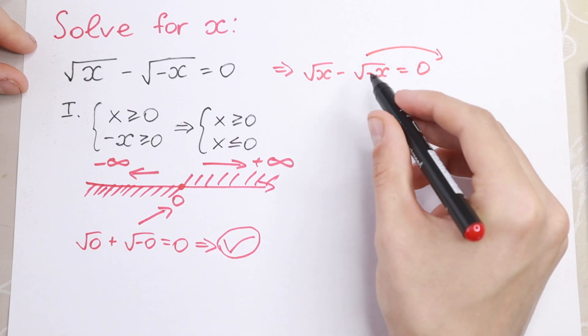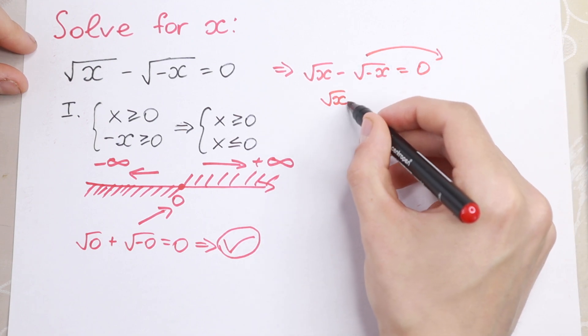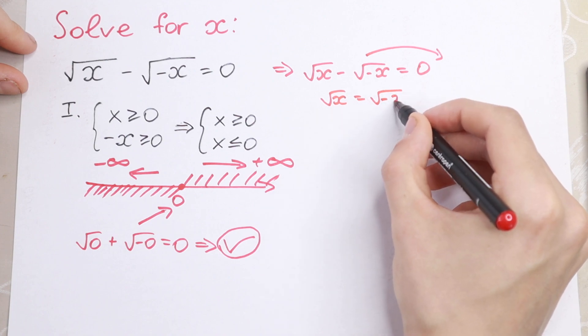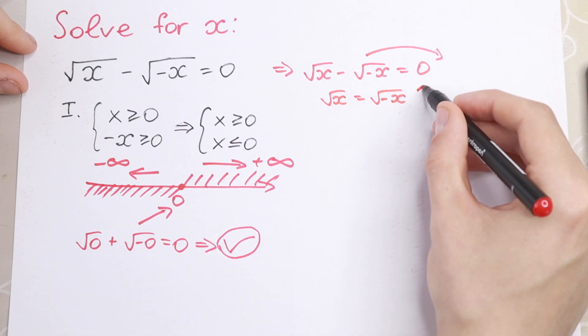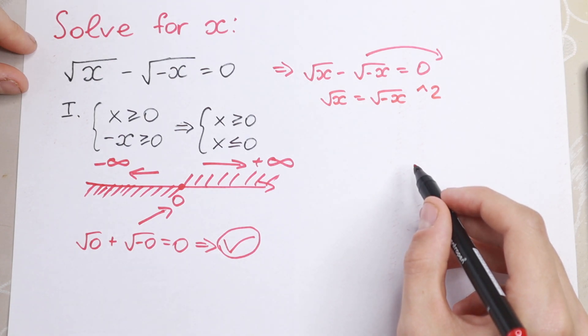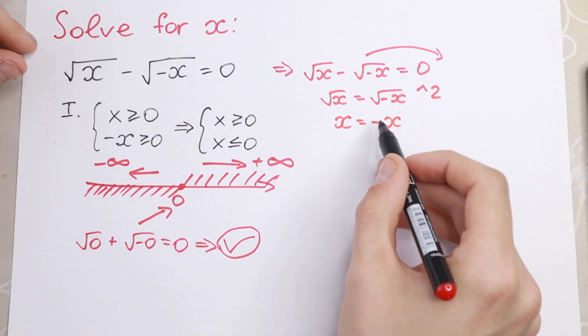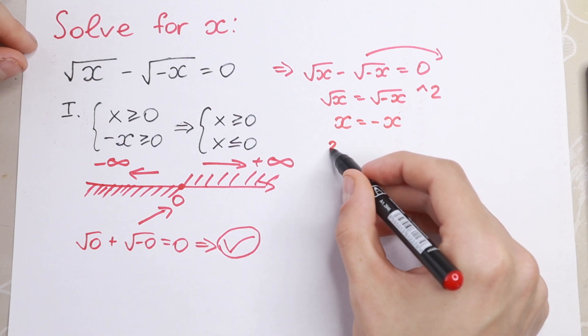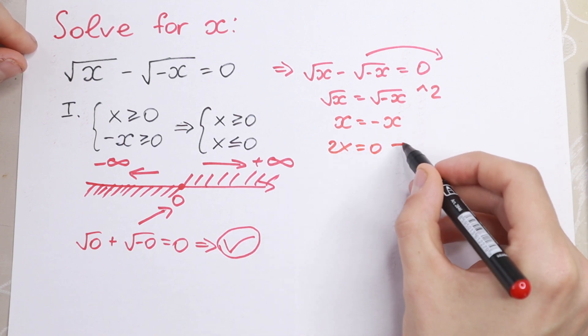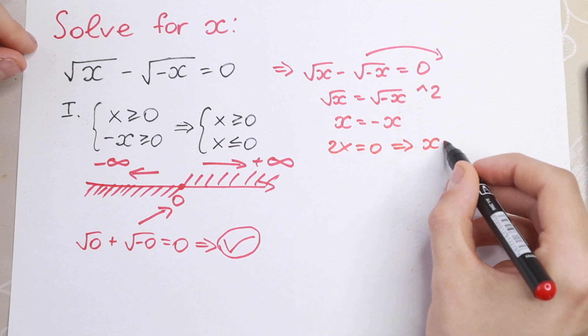Bring this on the right hand side, square root of x equal to square root of minus x, raising both sides to the second power, we will have that x equal to minus x. If we bring this minus x on the left, we will have 2x equal to 0, and from here x equal to 0 as well.